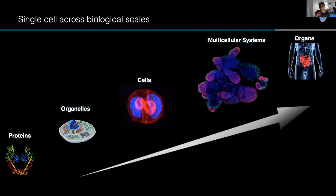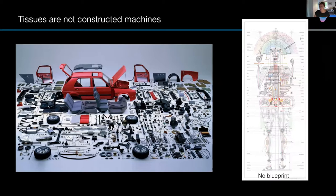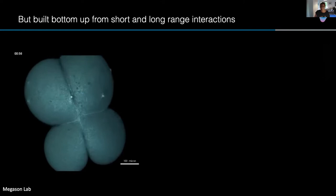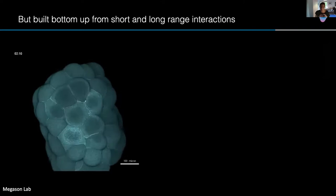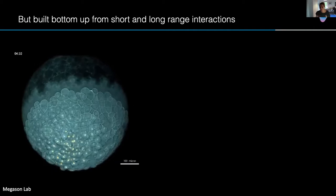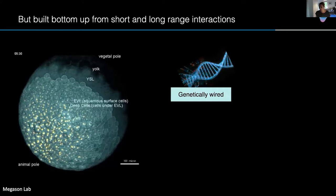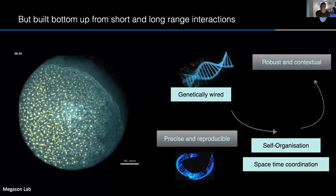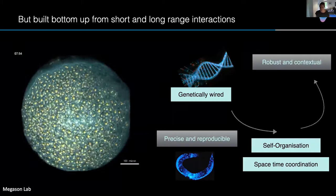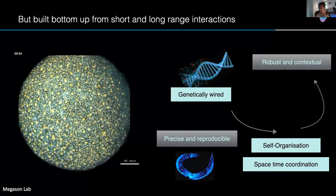The challenge is that these systems are not constructed machines. There's no blueprint of a tissue — they are built bottom-up from short and long range interactions between cells. Cells always need to maintain communication with the outside environment, sensing it and taking appropriate decisions to have processes that are robust and contextual. A lot of these processes are genetically wired to make them precise and reproducible.